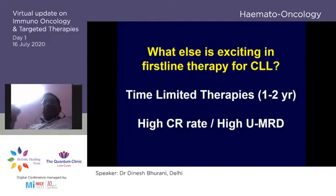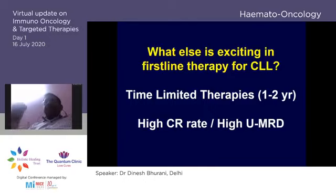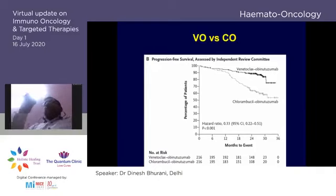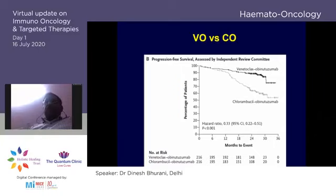What is exciting is time-limited therapy — ideally one to two years. We have venetoclax, which unfortunately is not yet really available here. Venetoclax has high CR rates and high MRD negativity. An important trial is venetoclax plus obinutuzumab versus chlorambucil plus obinutuzumab — a time-limited trial where venetoclax was used for 12 months, achieving high MRD negativity and very good progression-free survival.